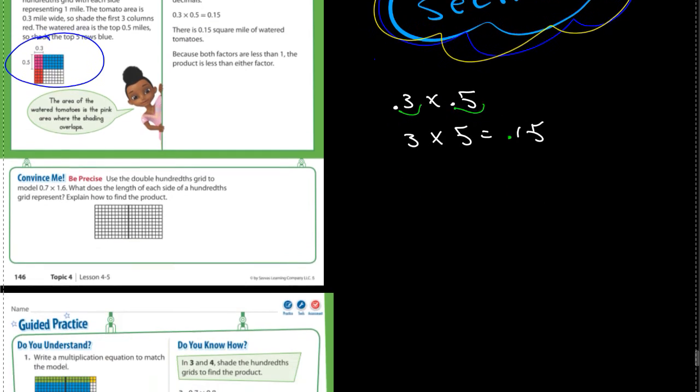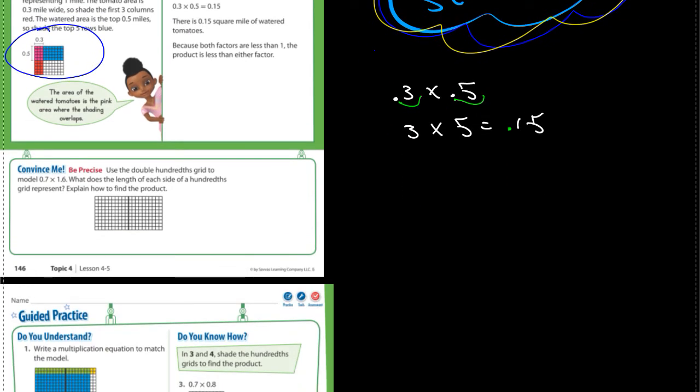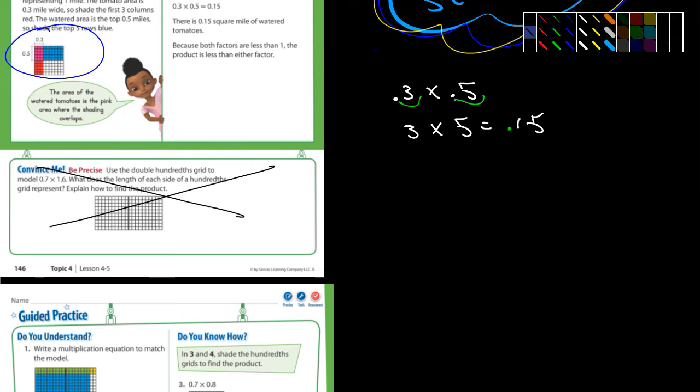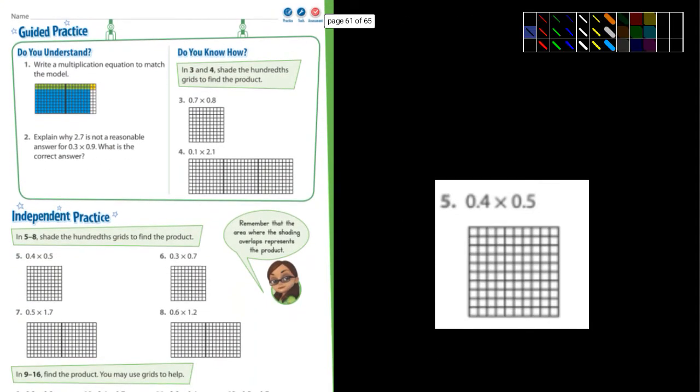Let's look at the convince me. I'm not going to worry about that. You guys can cross that out. Let's go down to the top of the guided practice. It says write a multiplication equation to match the model. They've got two grids here, and a lot of it is blue. Since it's two grids, you know that there's one that's completely full. That would be all blue. And then this part here is the second grid.